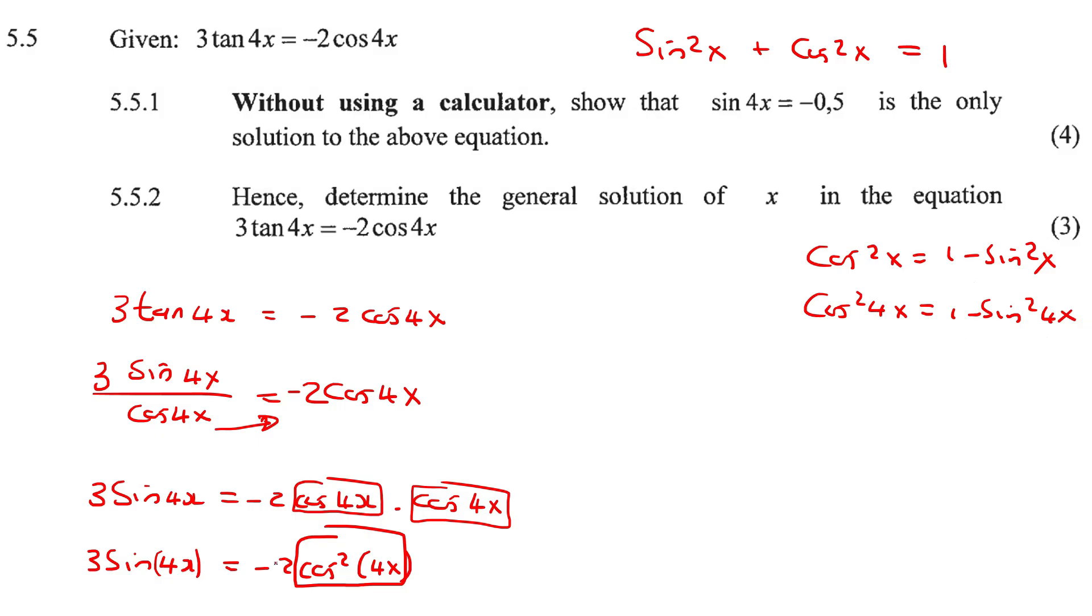Okay, that too, I'm just going to leave it. So we're going to end up with 3 sin 4x equals to minus 2 and then in brackets. And then we're going to replace that with 1 minus sin squared of 4x.